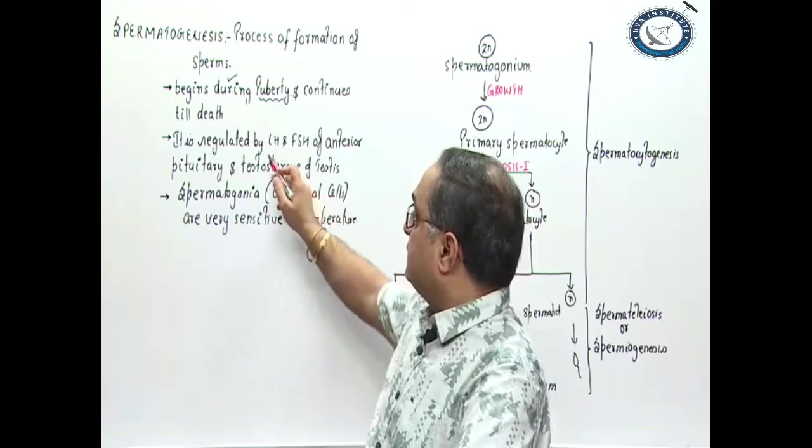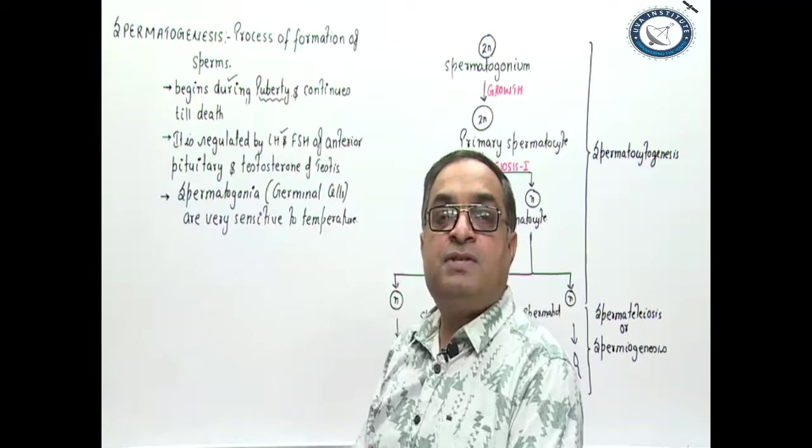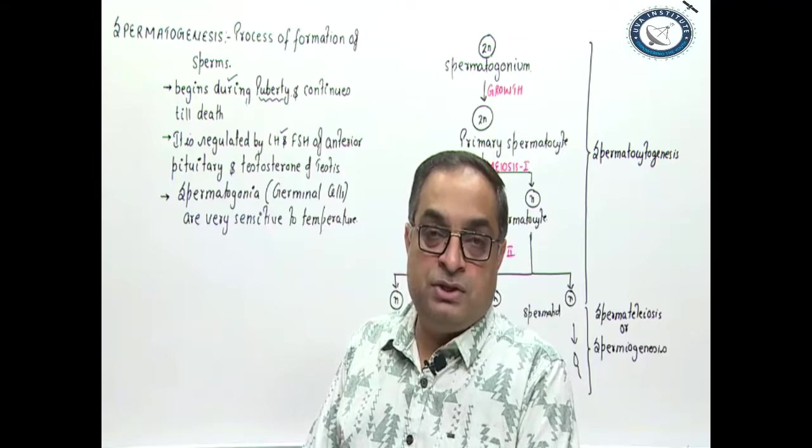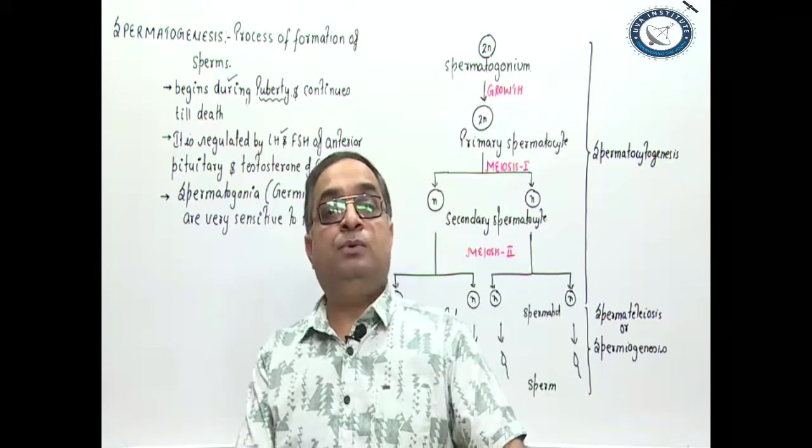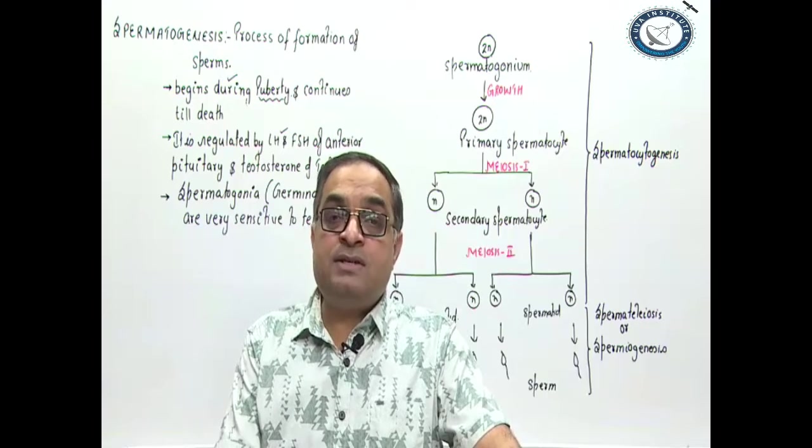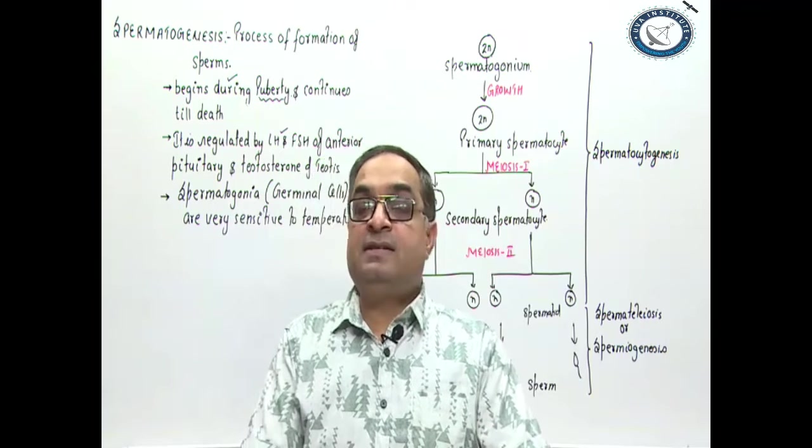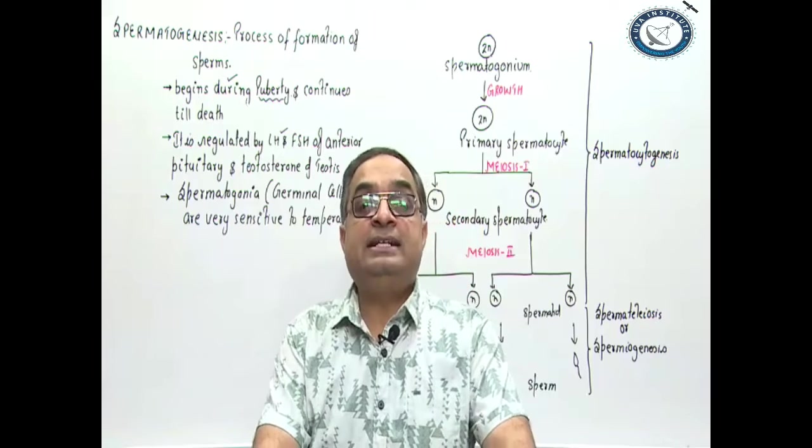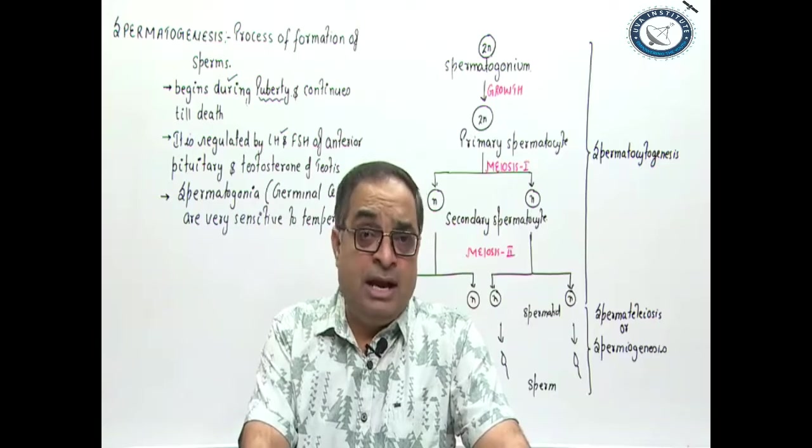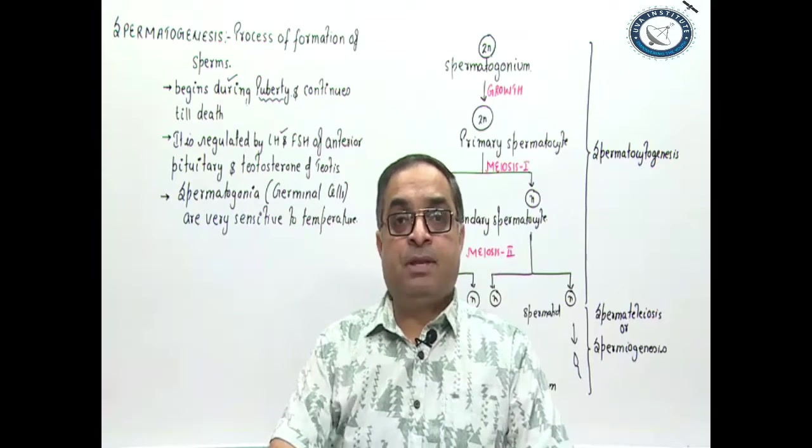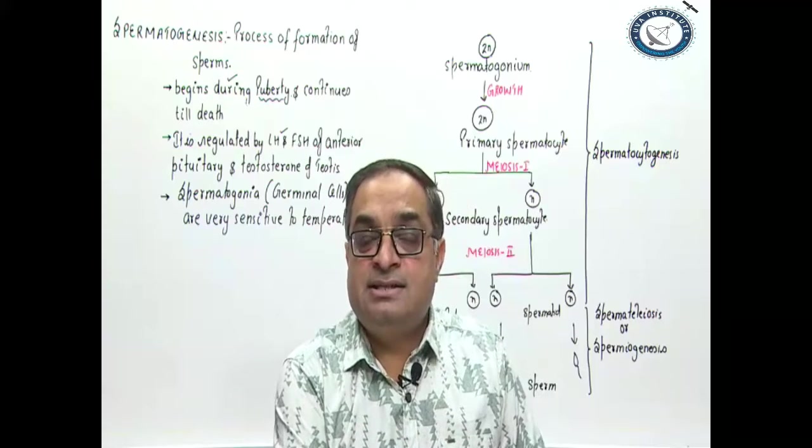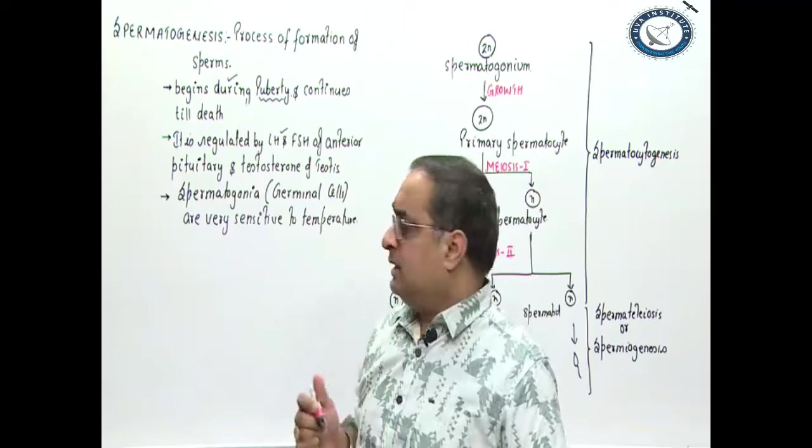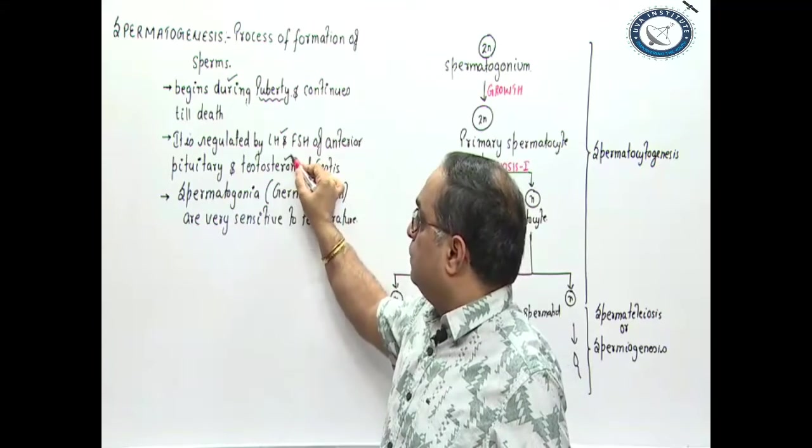This process is regulated by LH and FSH of anterior pituitary. LH is luteinizing hormone, FSH is follicle stimulating hormone. These two hormones through blood circulation, they act on specific cells of the testes. The receptors for LH are present on interstitial cells or the Leydig cells which are endocrine cells of the testes. And in response to LH, the Leydig cells secrete the male sex steroids collectively called androgens. One example of the androgens here we have given is testosterone.